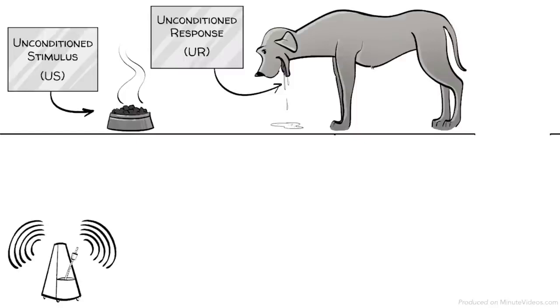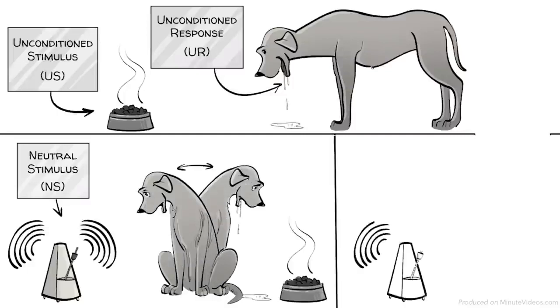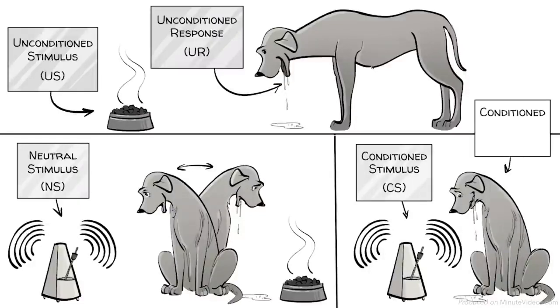The metronome is at first a neutral stimulus. Through the process of repetitive pairing with food, the dog learns to connect the two. This means that the neutral stimulus becomes the conditioned stimulus and the response to that a conditioned response.